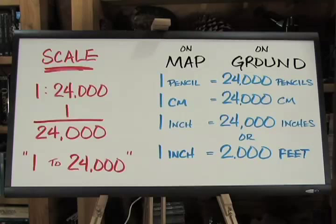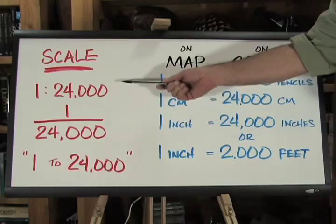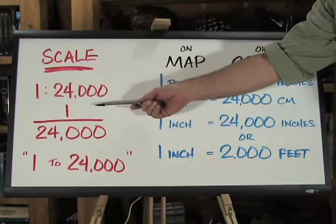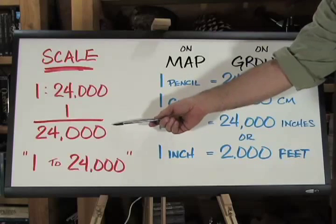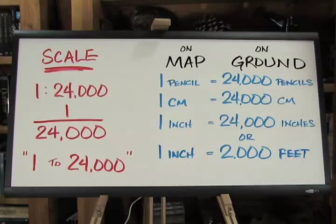The map scale is the relationship between distances in the real world and distances on the map. The scale can be displayed in different ways. These both mean the same thing. One unit of distance on the map equals 24,000 of the same distance units on the ground.